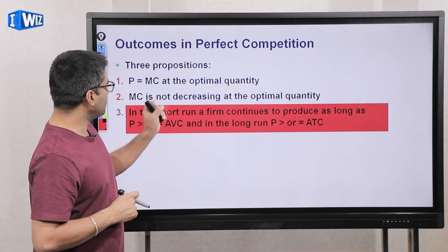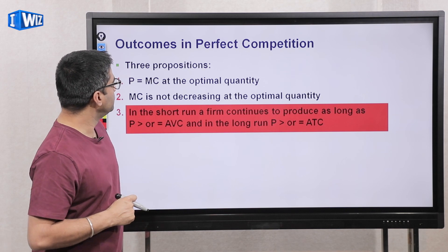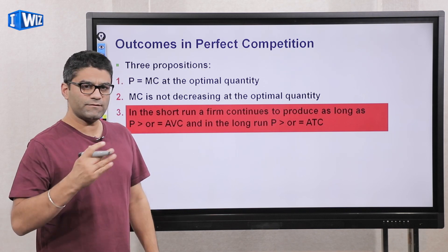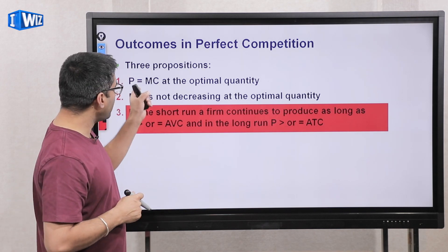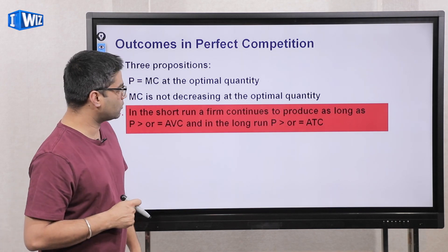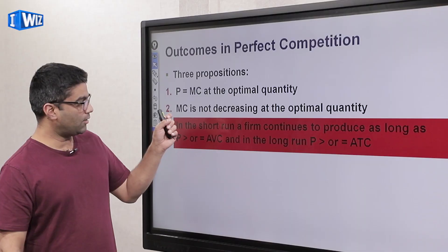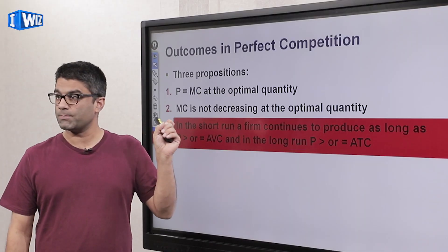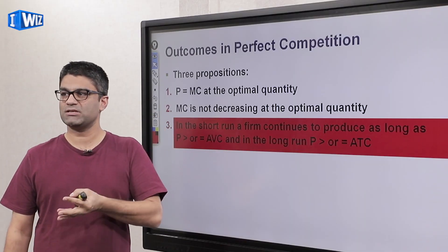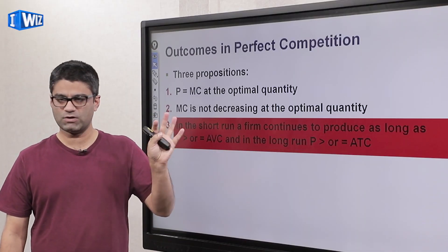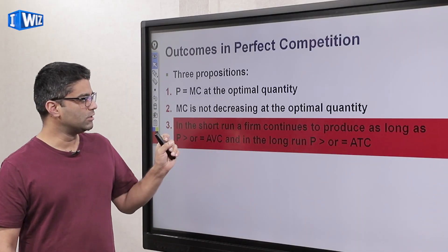We talked about the previous two propositions in the previous video: price equals marginal cost when the producer is producing at an optimal quantity, and also they cannot produce where MC is decreasing. Make sure you're familiar with those.